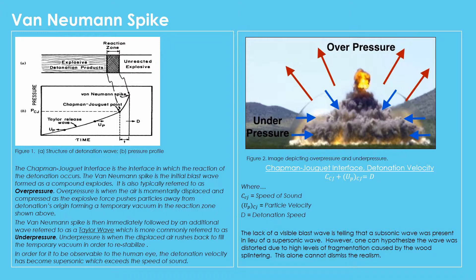Since an explosion rapidly displaces any gases or particles present, it can actually be felt as it generates pressure. After the blast wave forces particles out of the area, there is a brief moment in which a vacuum is formed — this is where underpressure occurs. Underpressure is a blast wave where particles rush back into the initial location to refill the void and restabilize. Since the scene lacks a visible blast wave, it suggests that a high-grade explosive was not used, though we could attribute this to distortion caused by high levels of fragmented wood and proximity to the origin of the explosive.